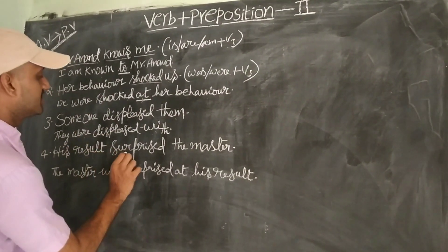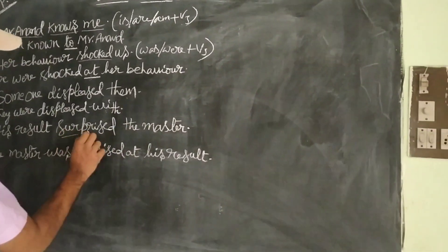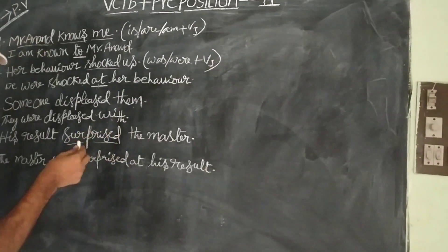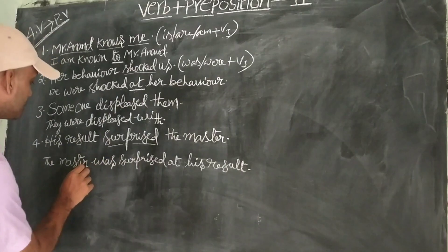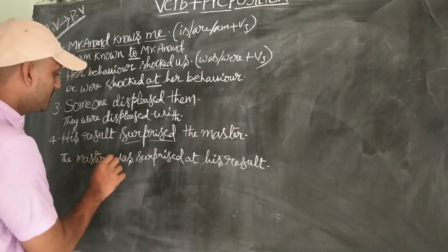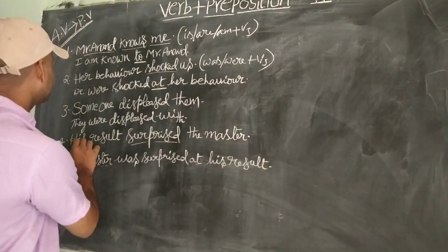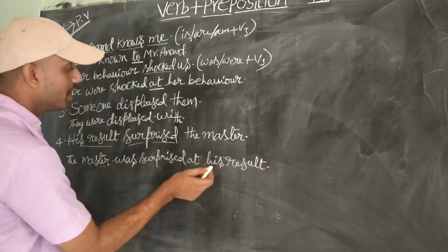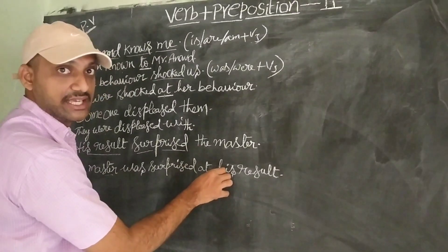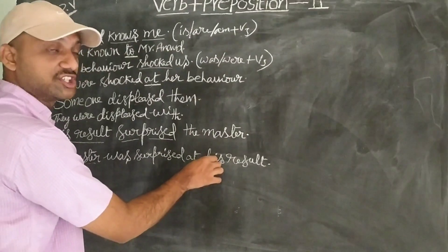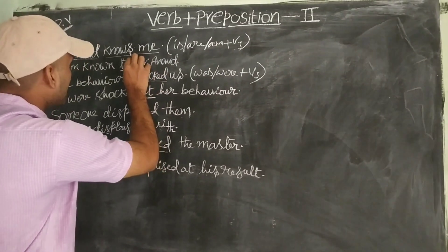His result surprised the master. 'Surprised' is V2, so the rule is V2/V3. The master was surprised — because 'the master' comes under 'he/she,' we use 'was.' The master was surprised at his result. We have to exchange the positions of doer and sufferer. The preposition 'at' is hidden in active voice but added in passive form.